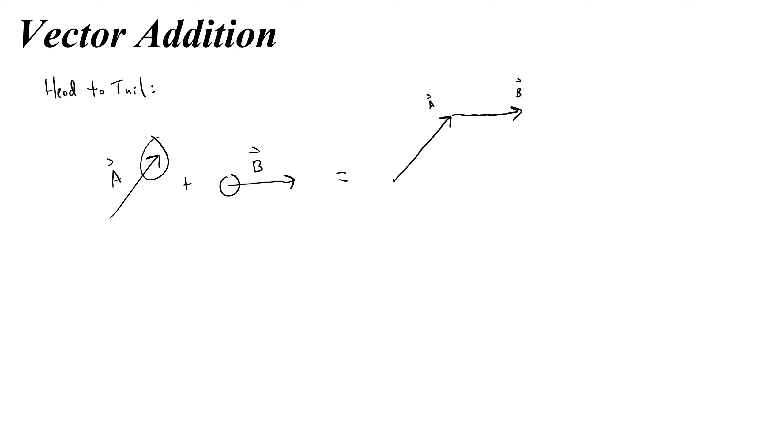So it would look like this. Now our sum, the sum of these vectors is the line that connects the tail of your first vector to the head of your last vector, and it points right there. So this vector here would be a plus b. Sometimes we call that the resultant, or we use the phrase the vector sum.